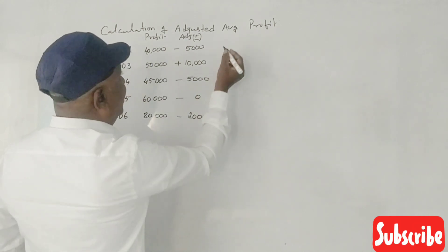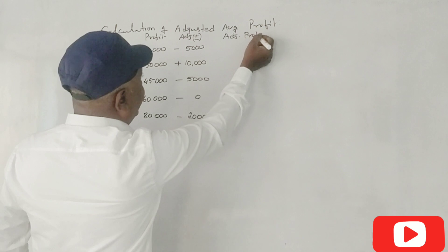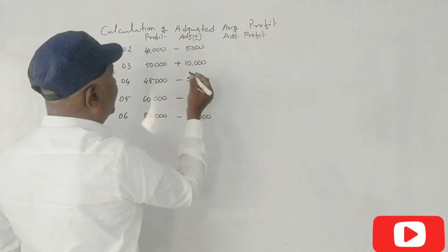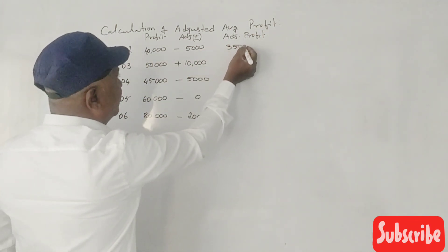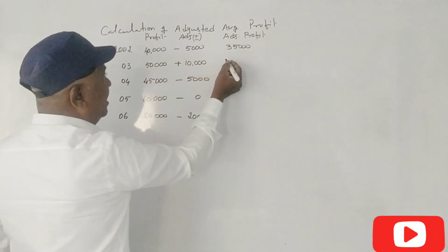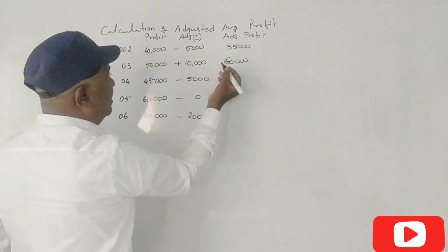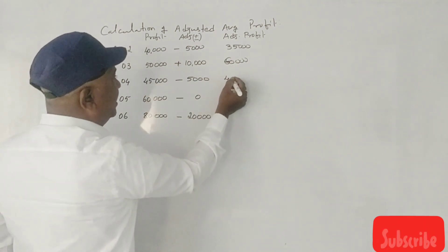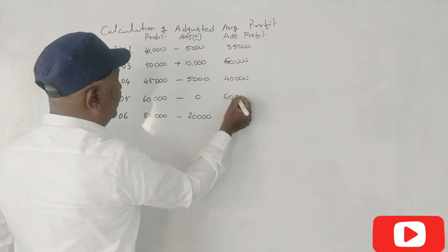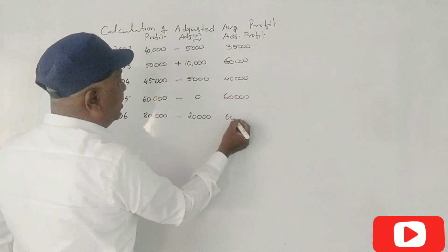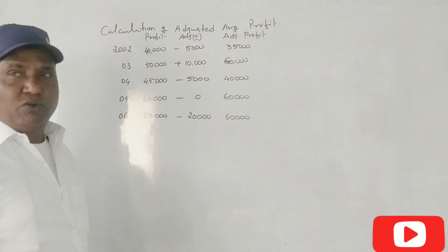This is the adjusted profit. 2002: 40,000 minus 5,000 = 35,000. 2003: 50,000 plus 10,000 = 60,000. 2004: 45,000 minus 5,000 = 40,000. 2005: 60,000. 2006: 80,000 minus 20,000 = 60,000. Total adjusted profit is 2,55,000.